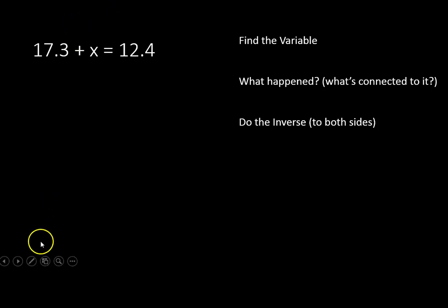So let's go ahead and find our variable. Our variable is x, we'll write that in here, and what happened to x is located right here. We are adding 17.3 to x. So we're going to do the inverse to both sides of the equation. In other words, the inverse of adding is subtracting. So we're going to subtract 17.3 from both sides of this equation. It'll look like this.